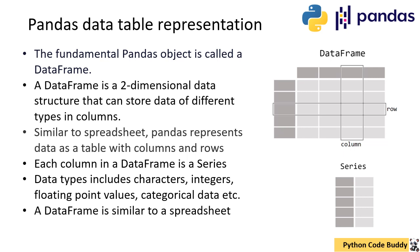Now we come to the fundamental pandas object, which is called a DataFrame. A DataFrame is a two-dimensional data structure that can store data of different types in columns. It has columns and rows, and it is very similar to a spreadsheet like Excel. Pandas represents data as a table with columns and rows, and each column in a DataFrame is called a Series. Data types can include characters, integers, floating-point values, categorical data, and more.